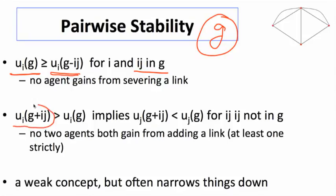If somebody wants a new link, then it should be that the other person didn't want it. Otherwise it should be added. So for this to be stable and not subject to further changes, if some link ij is not in G, then it should be that if one person wants it, the other person doesn't want it. It could be that neither person wants it, but it can't be that they're both happy to have this link and it not be in there. So this is a very weak concept.